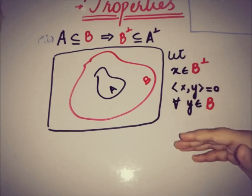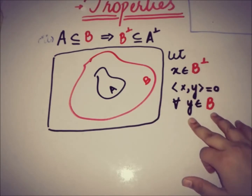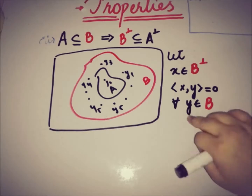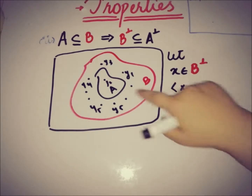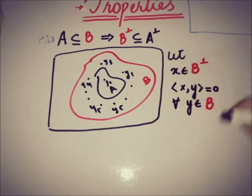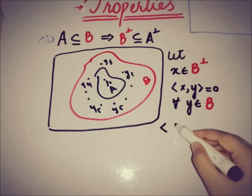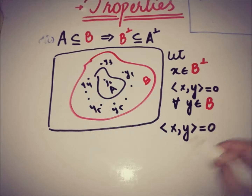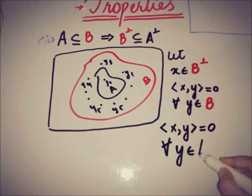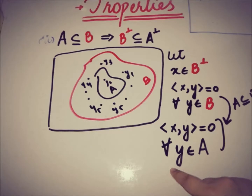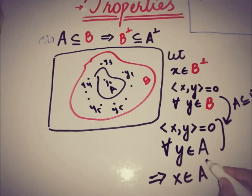Since A is a subset of B, if Y is taken from B then we can also say this is true for elements of A as well, because A is a subset of B. So we can say the inner product of X and Y is 0 for all Y taken from A. This implies that X is a member of A annihilator.